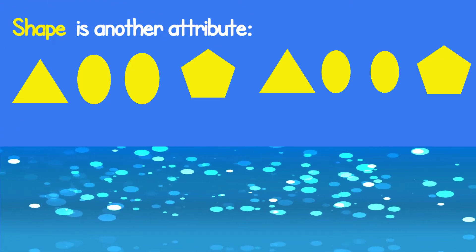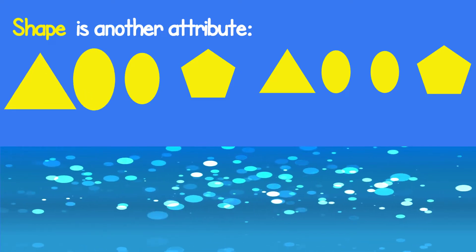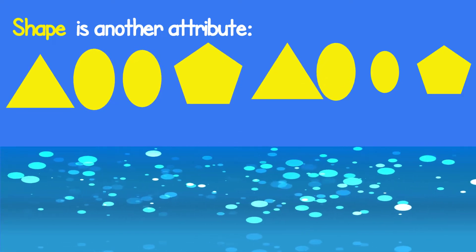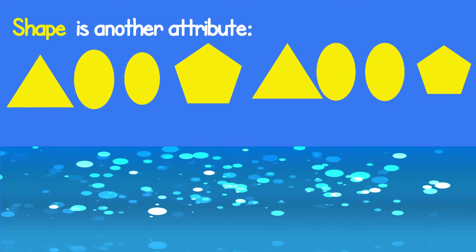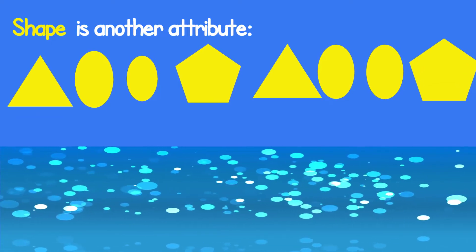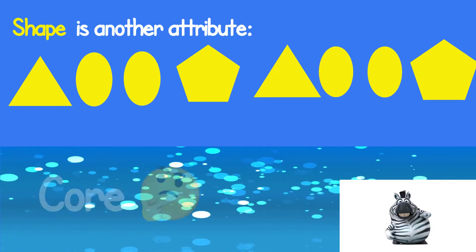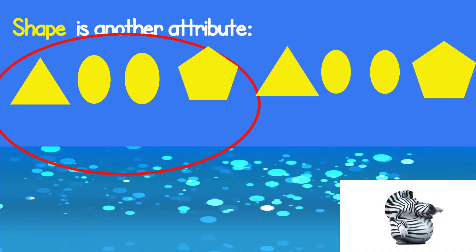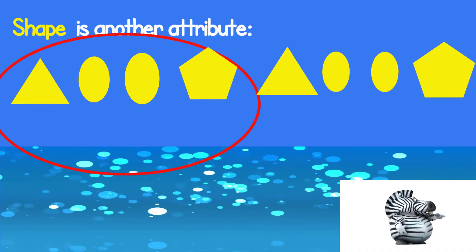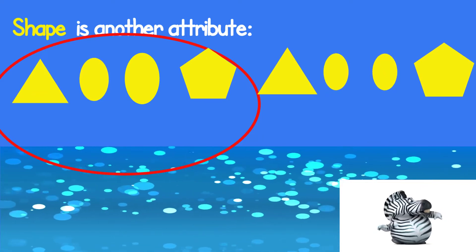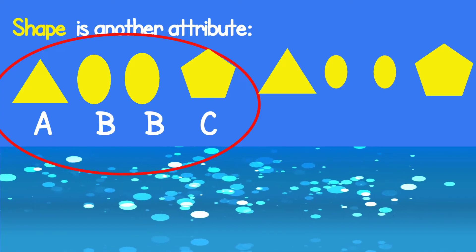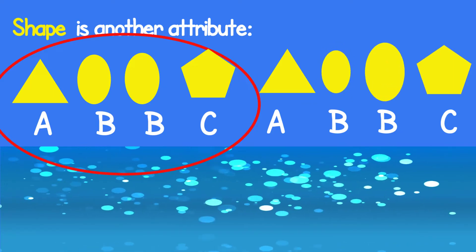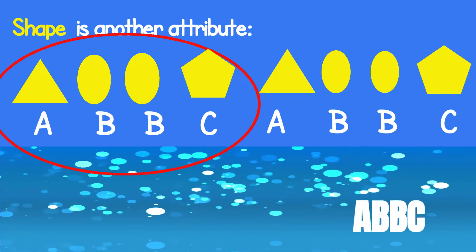Shape is another attribute. Triangle, oval, oval, oval, pentagon. Triangle, oval, oval, oval, pentagon. Can you find the core? You got it! Can you translate or name the pattern? A, B, B, C, A, B, B, C. There it is!